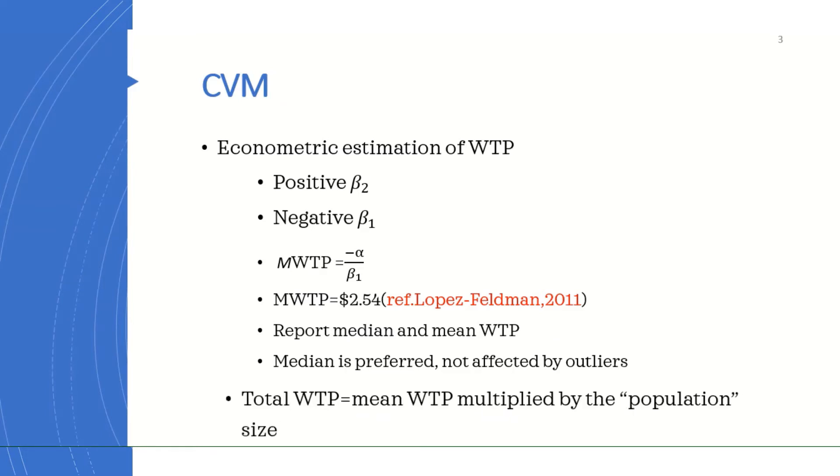Multiplying willingness to pay, the mean or median willingness to pay by the population size gives total willingness to pay. This total willingness to pay can be changed into net present value over say 10, 15, or 20 years, and the results could be used for appraisal of the proposed project or plan.